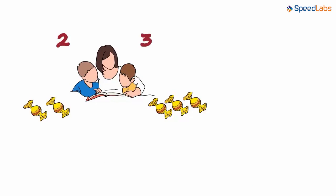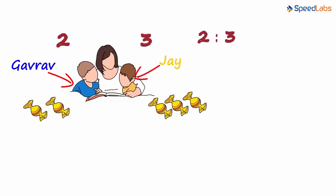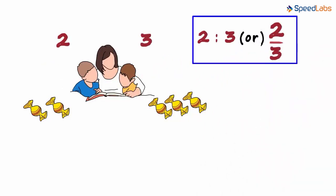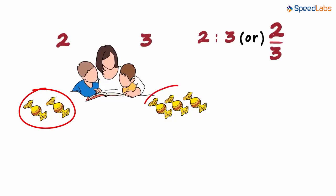Of course, Jai did not complain. So the ratio of the number of chocolates Gaurav got to the number of chocolates Jai got is written as 2 colon 3 or 2 divided by 3. This can be read as 2 is to 3. We are basically comparing the number of chocolates Gaurav got to the number of chocolates Jai got.